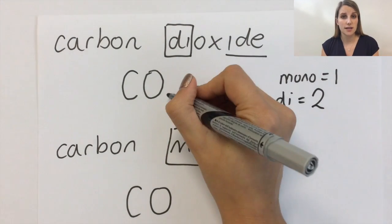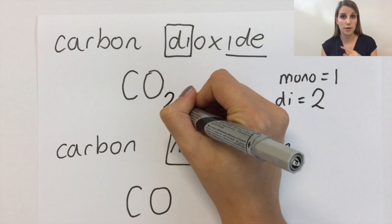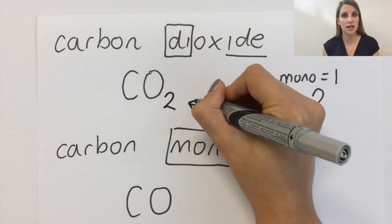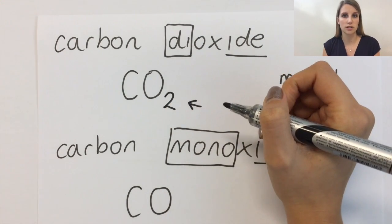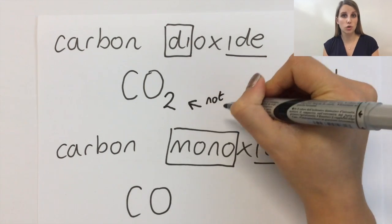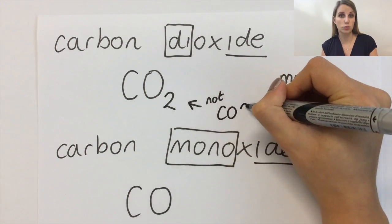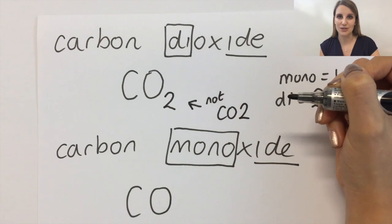The way that we write this is your capital C, showing carbon. Your capital O, showing oxygen. And a small two at the bottom, showing the number of oxygens. Make sure that this doesn't look like CO big 2. That's not the right notation.